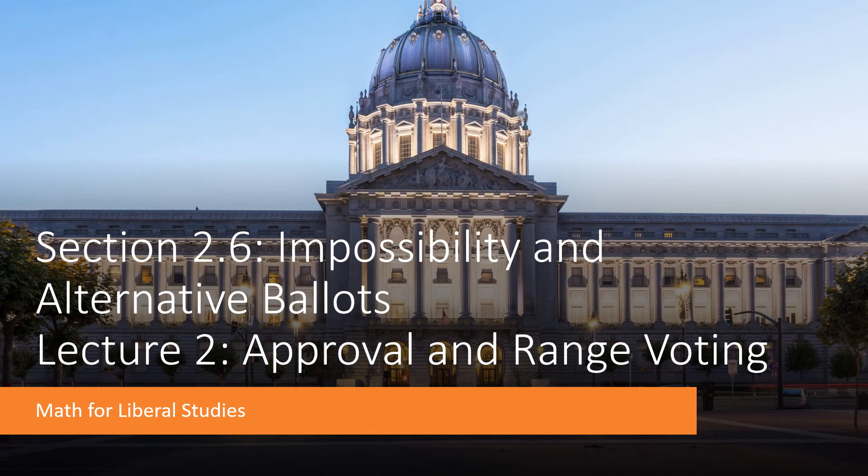This is the second video lecture for section 2.6 on impossibility and alternative balance. In this lecture I'll be talking about approval and range voting.